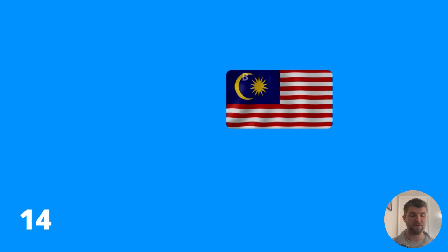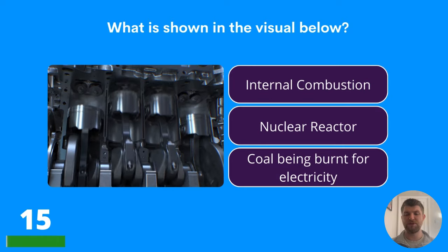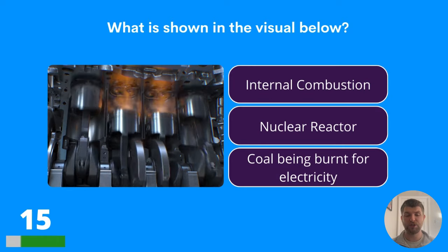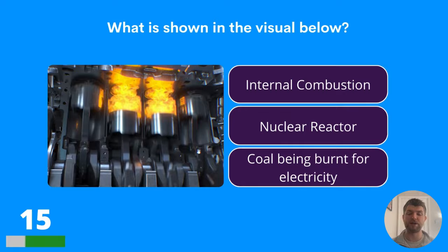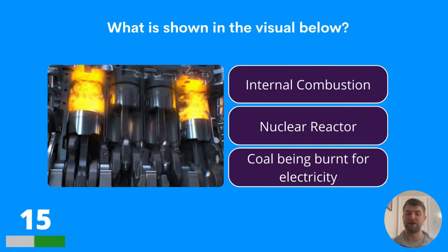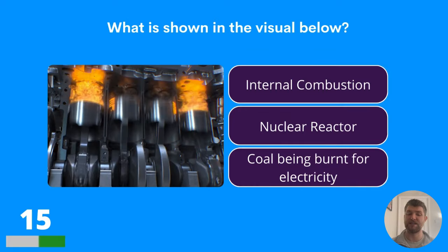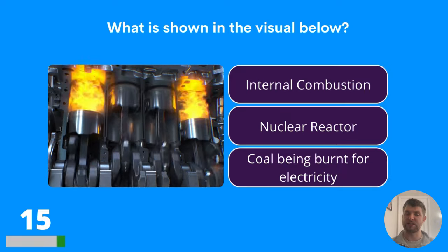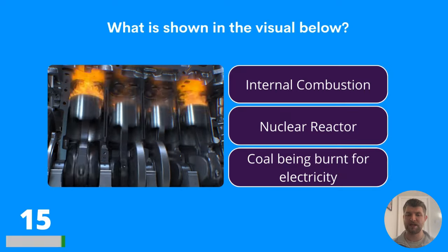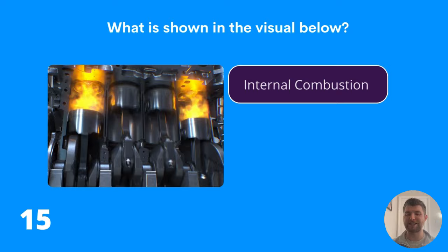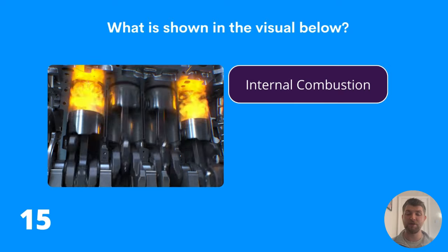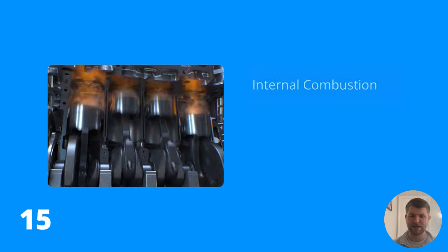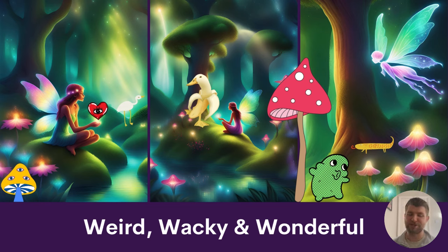Question fifteen: what is shown in the visual below? Is that internal combustion, a nuclear reactor, or coal being burnt for electricity? Looks like a stomach cramp to me, but the correct answer is internal combustion — sort of the same thing as a stomach cramp, I guess. Those are the answers on the visual quiz.